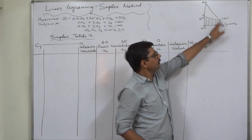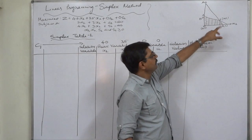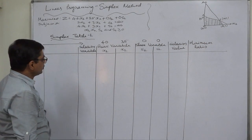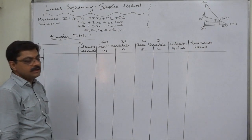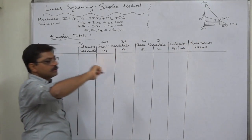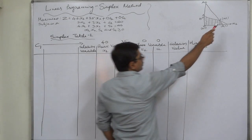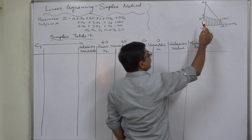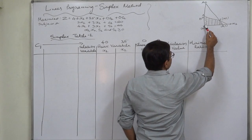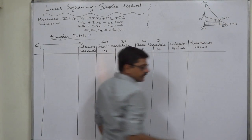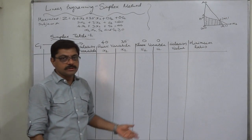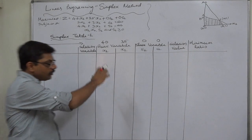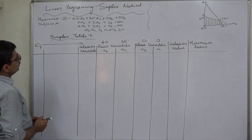As we know, the optimal solution of any linear programming problem lies at a corner point only. We don't need to analyze the whole feasible region. In the graphic method we have four corner points, but the simplex method will not go through all four. The entry point is (0,0), but the simplex method will reach the optimal solution at B via the shortest possible route — either O to A to B, or O to C to B. The simplex method selects the shortest route to reach the optimal solution.